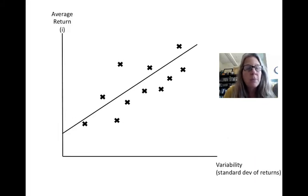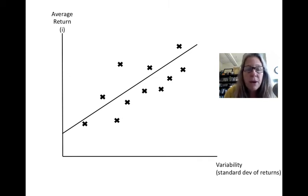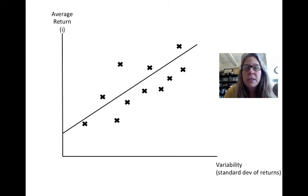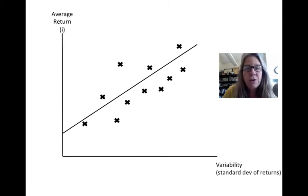What they've done in this model is they plotted variability on the x-axis — specifically, the standard deviations of the returns. So how variable are the returns? And then they plotted that against the actual returns. What they found was there was an increasing line, a pretty good fit between standard deviation and return, meaning that higher variability corresponds to higher return, and lower variability corresponds to lower return.